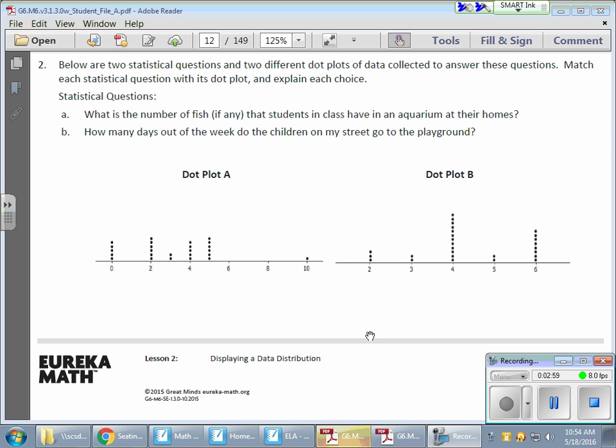First scenario, what is the number of fish, if any, that students in class have in an aquarium at their homes? Now, I don't know about you, but I had one fish growing up. And he didn't live very long. So it wasn't common for us to have lots of fish. It wasn't a very popular pet to have. But if you did have fish, some people had a larger tank that had a lot of fish. But I would know that there were kids, friends of mine, that didn't have any fish at all. So zero might actually be a common value.